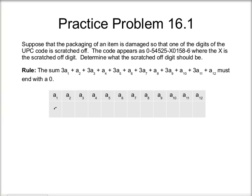So a1 is 0, and then I've got 5, 4, 5, 2, 5. A7 is my missing digit, so I'm going to put an X there. And I've got 0, 1, 5, 8, and 6.